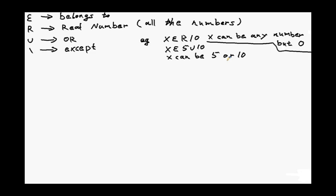The first symbol here means 'belongs to.' The second symbol R means real number. Real number is all the numbers from minus infinity to infinity.